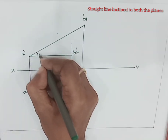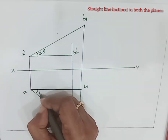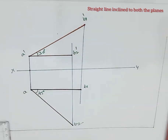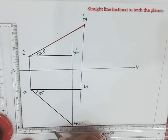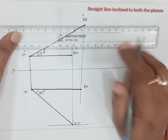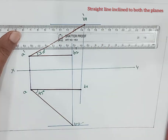This angle is 30 degrees and this angle is 45 degrees. After that, we have to draw locus or path lines passing through the front view point B, as well as the locus or path line passing through the top view point B.